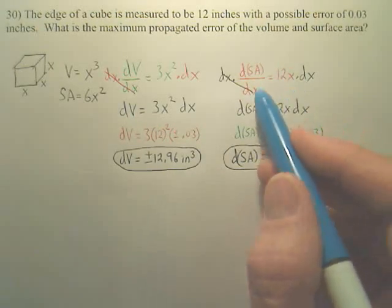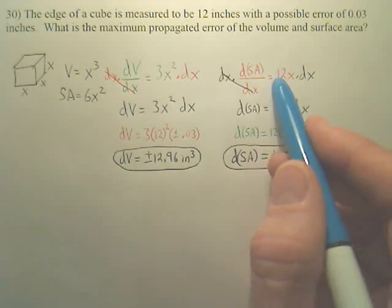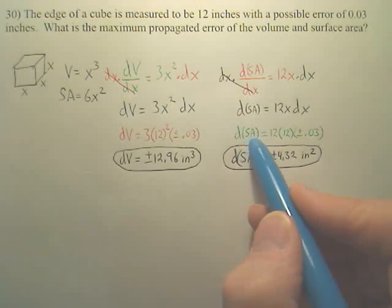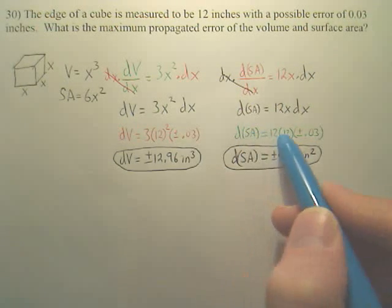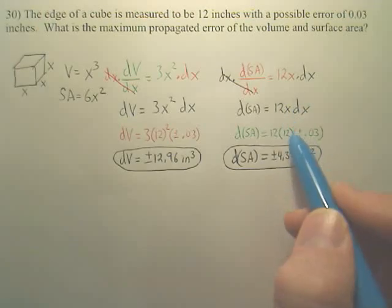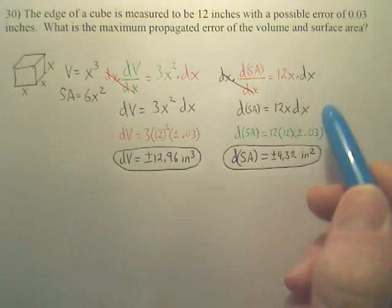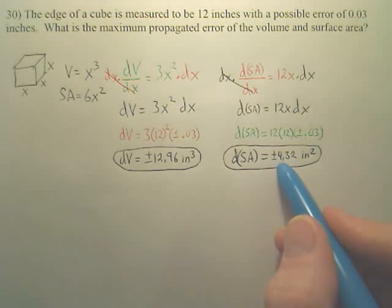When you go here, when you do surface area, you derive it, move the dx over. The possible change in surface area equals, when you plug in all your values, 12 inches, your error of measurement, you can be off by 4.3 square inches.